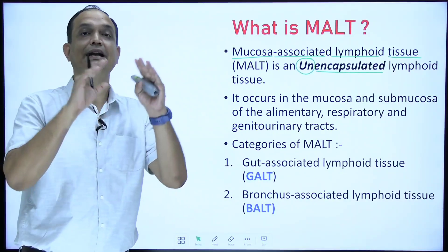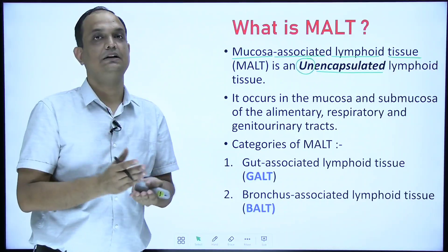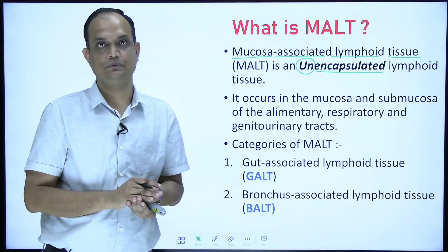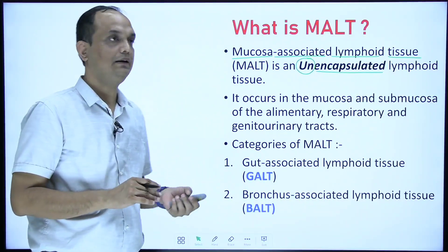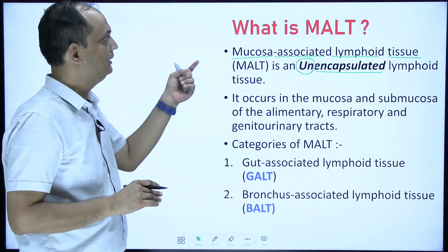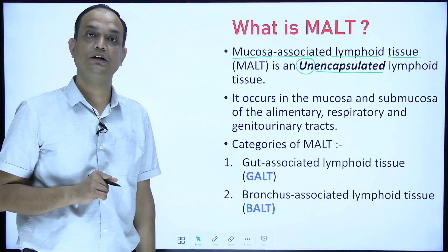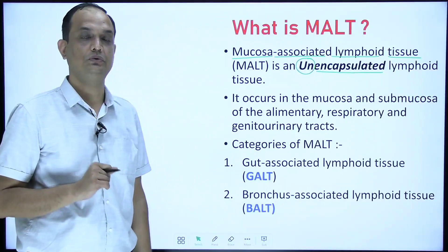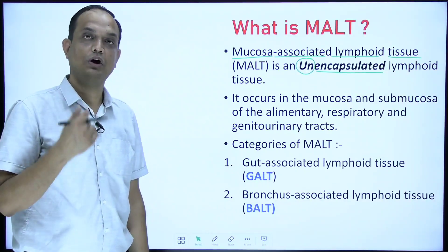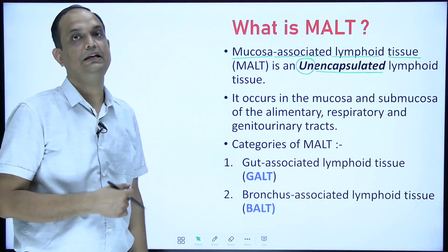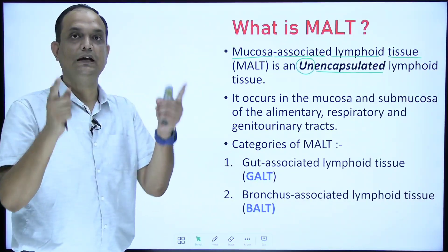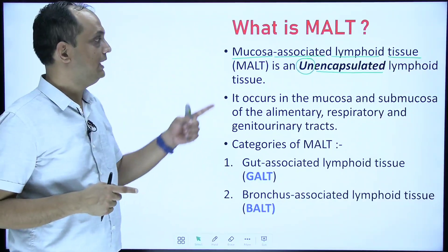Lymph nodes are characteristically surrounded by a capsule. But when we are talking about the Mucosa Associated Lymphatic Tissue, they are not having any kind of capsular layer outside.